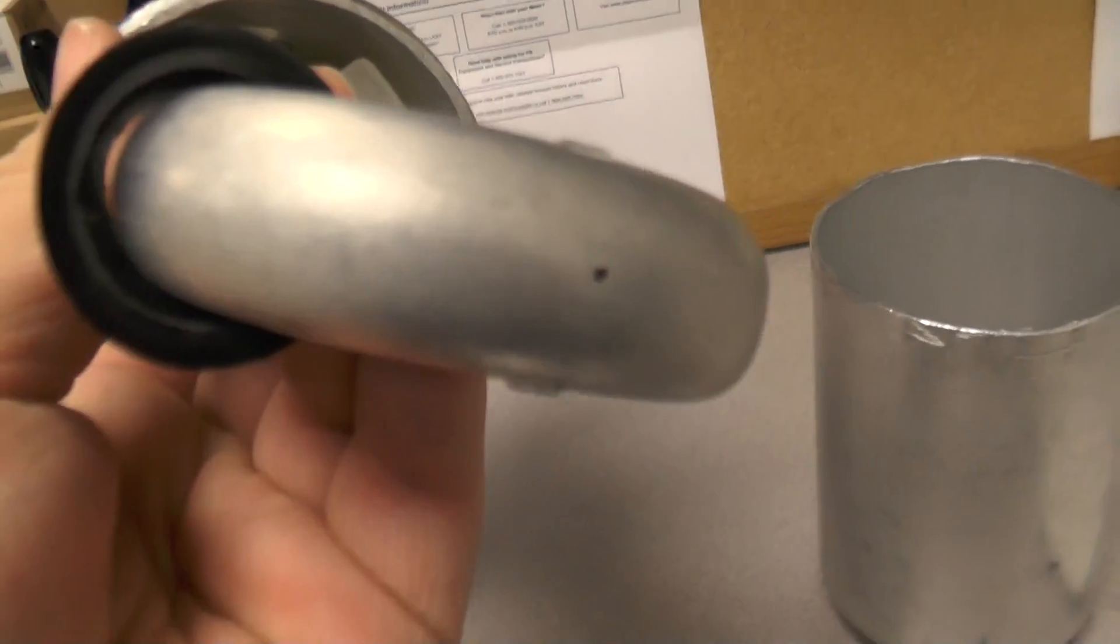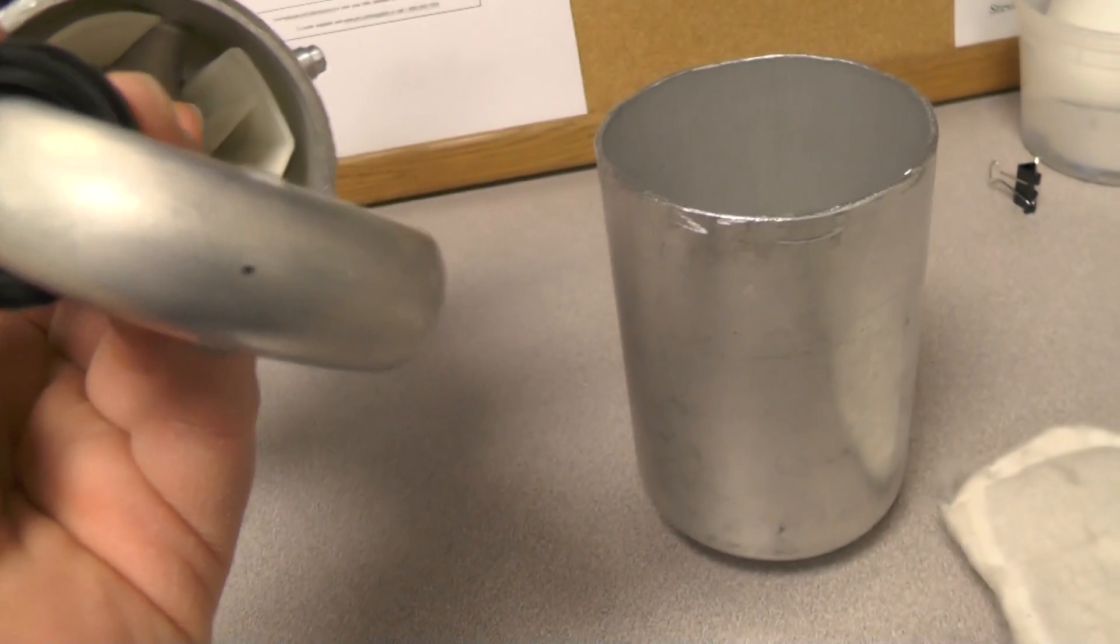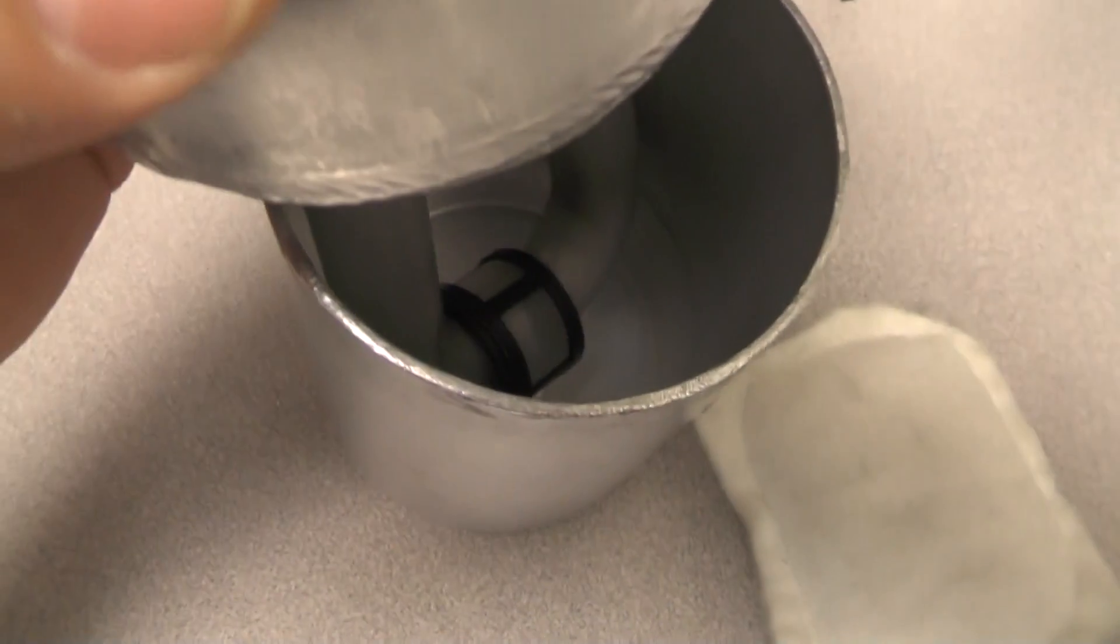And then because of that little hole right there, it's going to have a venturi effect that's going to suck oil from the very bottom of this can. And then be filtered with this little screen as it sits inside there.